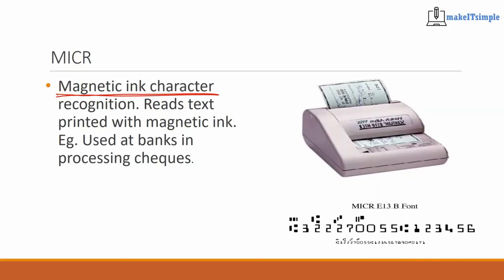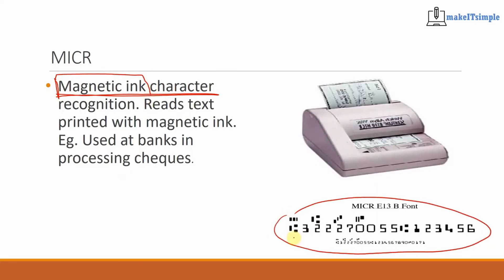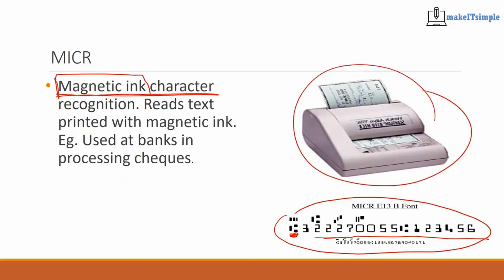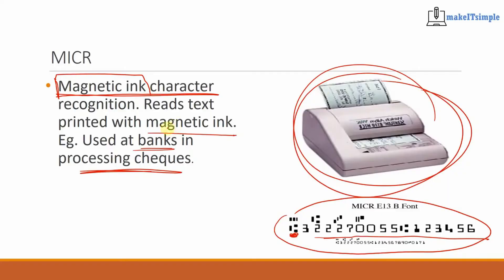MICR is an input device because it reads checks. At the bottom of every check is text written in magnetic ink. If you look at the bottom of a check, you'll see these kind of weird symbols and weird numbers — that's magnetic ink. The reader reads the magnetic ink to see if the check is valid. That's why people get checkbooks; you can't just print a check yourself. It has to come from the checkbook and it's used in banks.